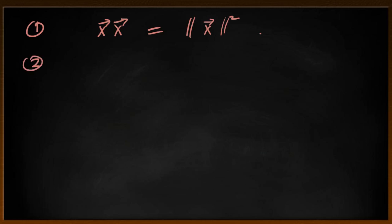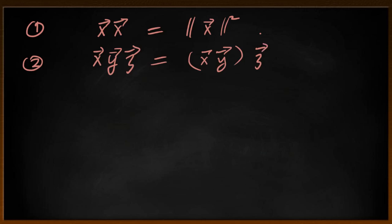The second axiom — I believe this one is called the associative axiom — basically, if we have any product of vectors, it doesn't matter what grouping that product is taken in. So the x, y, z product would be the same as x times (y times z), or the product of (x times y) times z. Since the specific grouping doesn't matter, we can drop the grouping and just say that this product exists.